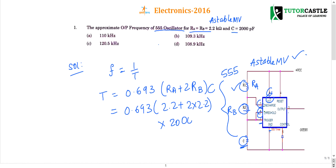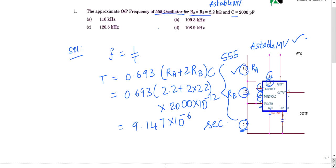The capacitor is 2000 picofarad. So on simplifying this, we are going to get 9.147 into 10 power minus 6 seconds. So the time period of oscillation of the timer is known now.